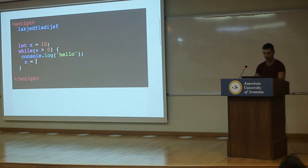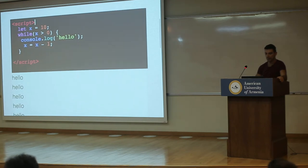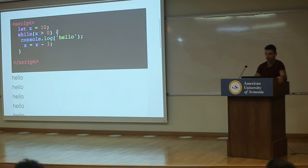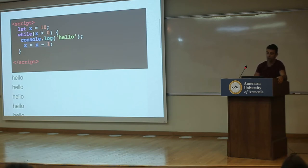So let's change it. Let's do x = x - 1. Now we get 10 hellos. Here's what's happening: we have x = 10, a condition while x is greater than 0, and we run the code in the block. We print, we change x, making it 9. Is 9 greater than 0? Yes. Console.log. 8. Is 8 greater than 0? Yes. We keep doing this until x becomes 0, at which point while is no longer true and we break out of it.